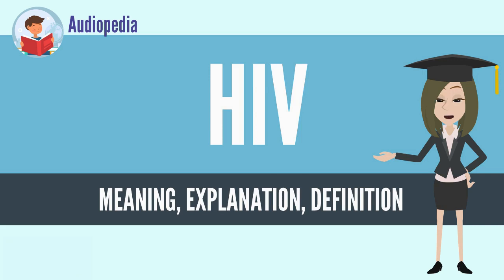In most cases, HIV is a sexually transmitted infection and occurs by contact with or transfer of blood, pre-ejaculate, semen, and vaginal fluids. Non-sexual transmission can occur from an infected mother to her infant during pregnancy, during childbirth by exposure to her blood or vaginal fluid, and through breast milk.